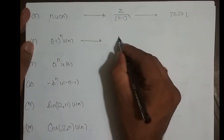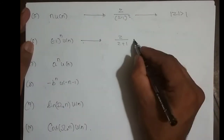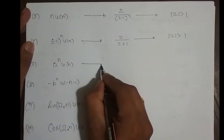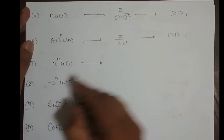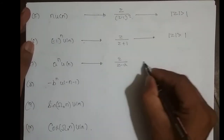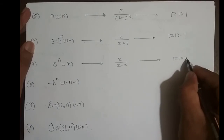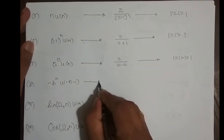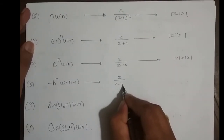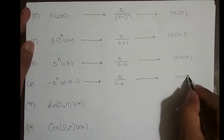For (-1)^n · u(n), the Z-transform is z divided by (z + 1), and its ROC is magnitude of z greater than 1. For a^n · u(n), an infinite length right-sided sequence, the Z-transform is z/(z - a) with ROC outside the circle of radius a. For -b^n · u(-n - 1), the Z-transform is z/(z - b) with ROC inside the circle of radius b.